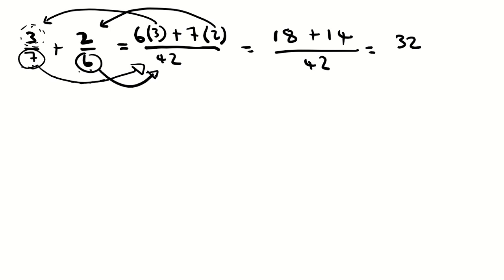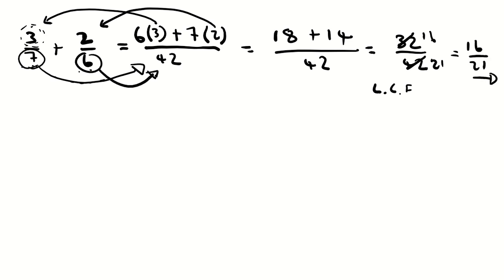So 18 plus 14 equals 32 over 42. Now ask which number goes into both 42 and 32 — the highest is 2. We call this the lowest common factor. 2 goes into 42 twenty-one times and into 32 sixteen times, so the answer is 16 over 21. We can't reduce it further because no number goes perfectly into both 16 and 21.